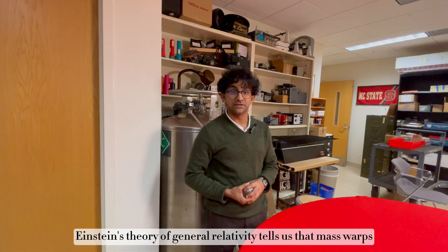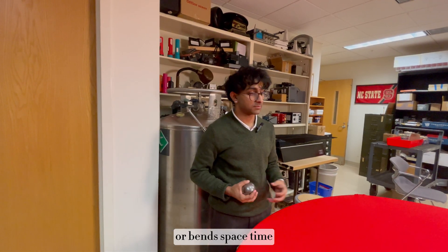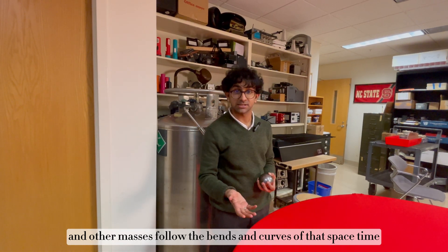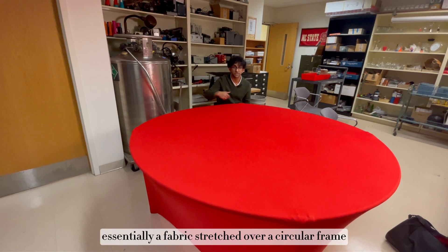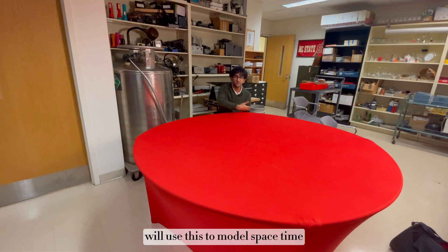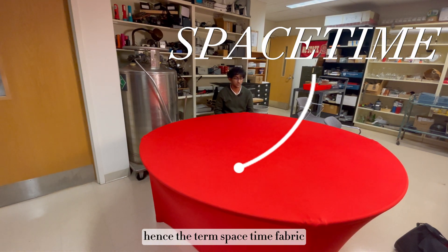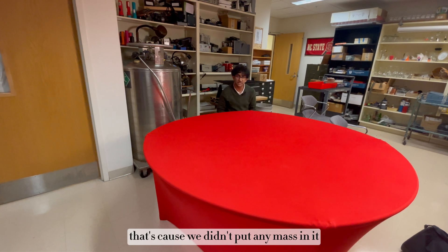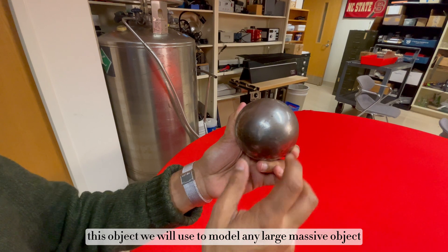Einstein's theory of general relativity tells us that mass warps or bends spacetime, and other masses follow the bends and curves of that spacetime. Here we have a pretty standard setup, essentially a fabric stretched over a circular frame. We'll use this to model spacetime, hence the term spacetime fabric. This spacetime right now is flat and has no bends or curves in it. That's because we didn't put any mass in it.